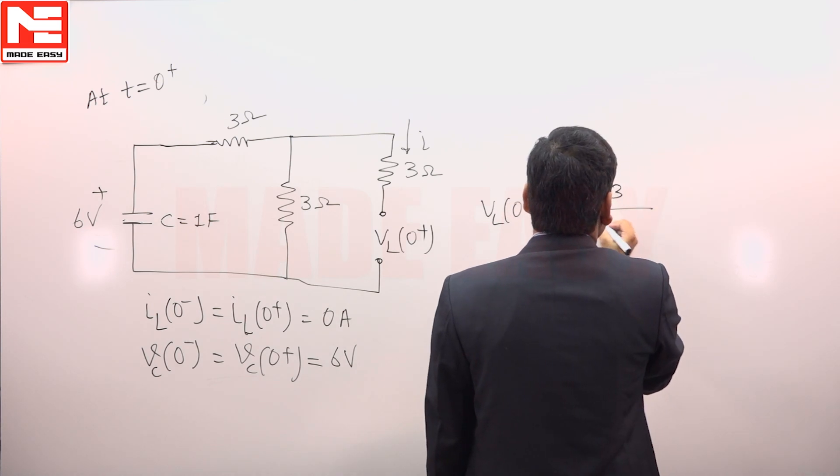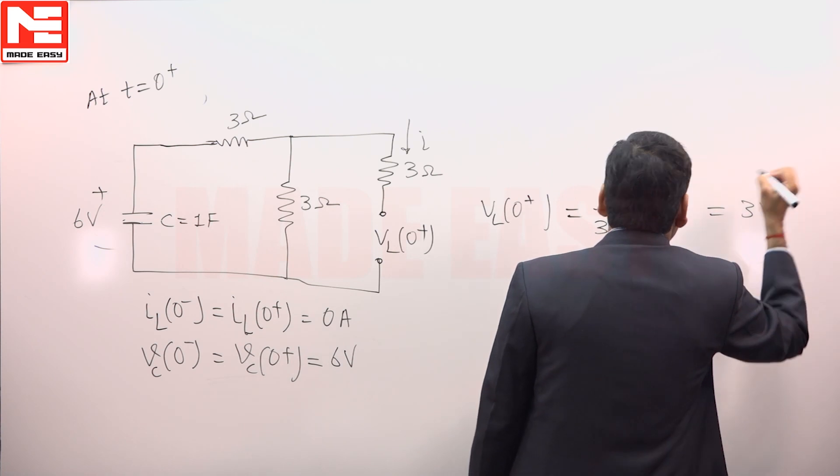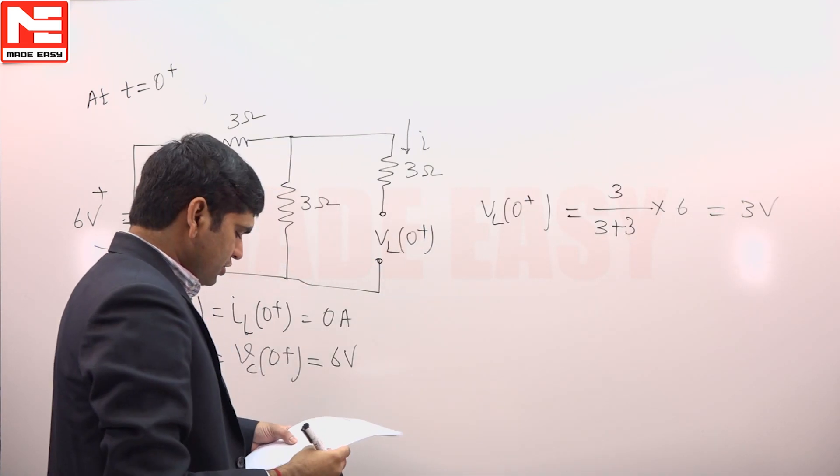3 divided by 3 plus 3 into 6, that is equal to 3 volts. This is the voltage across this branch.